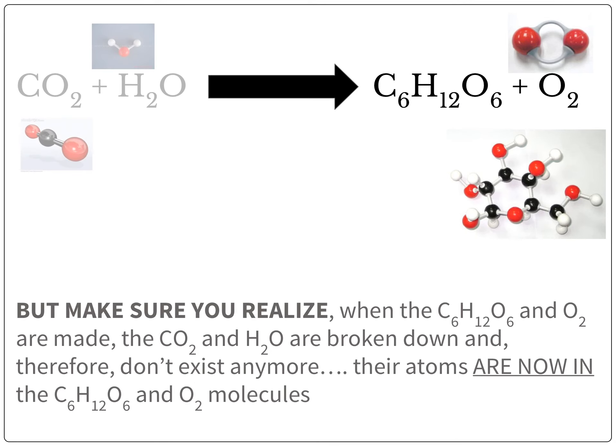One important thing to realize is that when the glucose and oxygen are made, the carbon dioxide and water that initially went in are broken down and therefore don't exist anymore. Their atoms went into the new molecules. So the atoms that existed in the CO2 and H2O initially are now part of the glucose molecule and the new oxygen molecule.